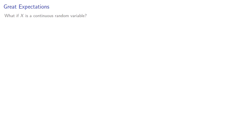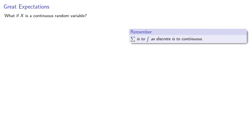We introduced the idea of expected value when x was a discrete random variable. What if x is a continuous random variable? The important thing to remember is that sum is to integral as discrete is to continuous — any time we use a sum for a discrete quantity, it translates into an integral for a continuous quantity. And so we defined the following.